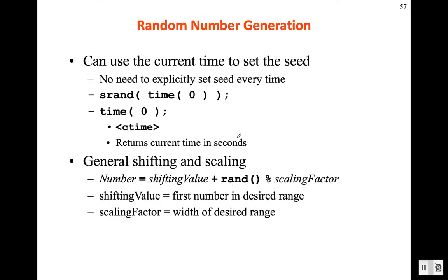To make sure the seed value is always different, we can use the current time as the seed value. The current timestamp, including seconds or microseconds, is always different. So if we use time as the seed value for srand(), the seed will always be different, and therefore the random number sequence will always be different.